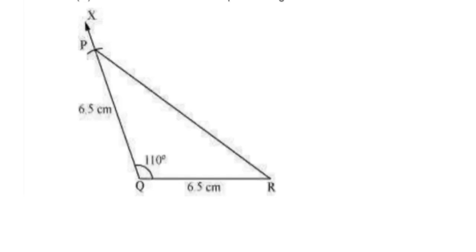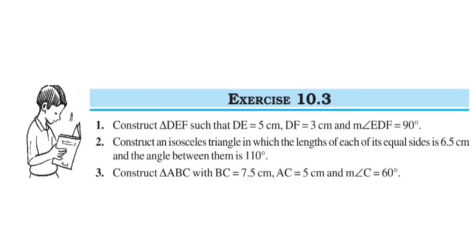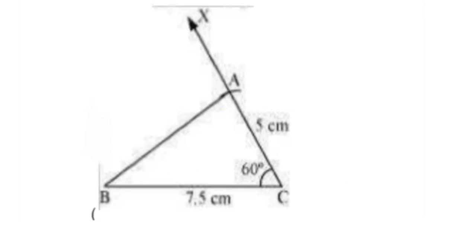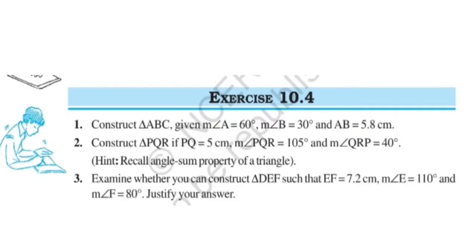Now see Question 3: Construct triangle ABC with BC equal to 7.5 centimeters, AC equal to 5 centimeters, and angle C equal to 60 degrees. See the steps: draw a line segment BC of length 7.5 centimeters. At point C, draw a ray CX making 60 degrees with BC. Taking C as center, draw an arc of 5 centimeter radius; it intersects CX at point A. Join A to B to obtain triangle ABC. So triangle ABC is the required triangle. Exercise 10.3 is completed.